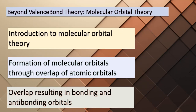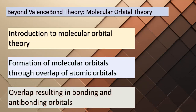Today we're unveiling an advanced concept that pushes the boundaries of our understanding: molecular orbital theory. This theory goes beyond valence bond theory and dives headfirst into the world of molecular orbitals. When atomic orbitals from different atoms overlap, they form molecular orbitals. These newly created orbitals can be either bonding, where electrons are shared constructively, or anti-bonding, where electrons are less likely to be found. Molecular orbital theory provides a comprehensive explanation for bonding, excited states, and light absorption, allowing us to explore even the most complex molecular interactions.